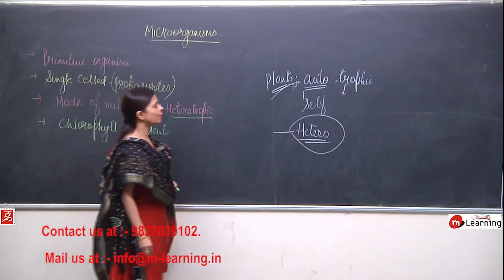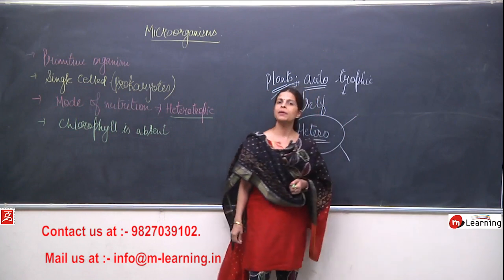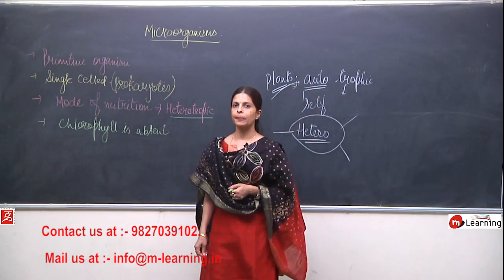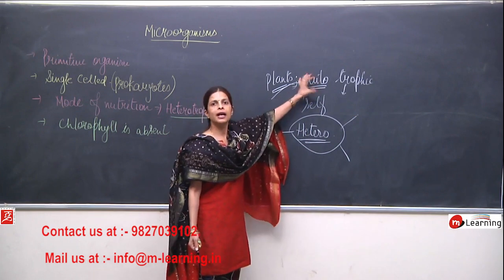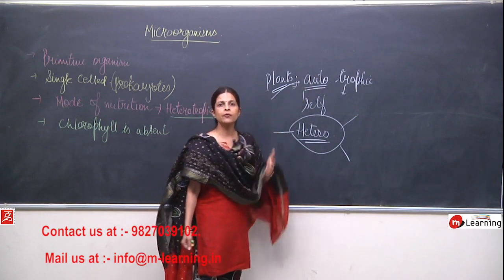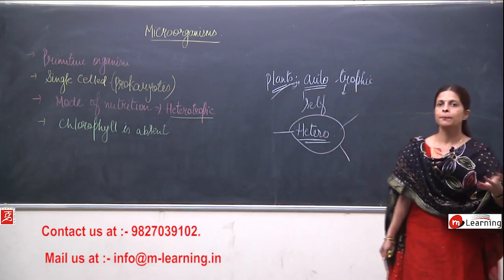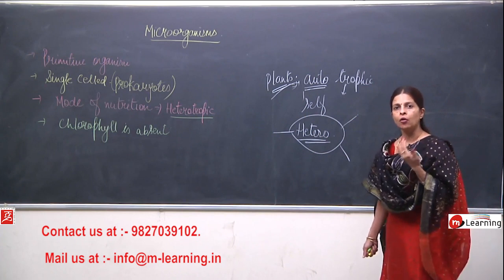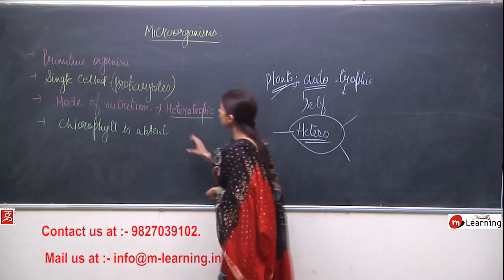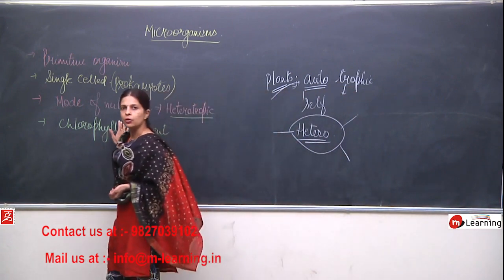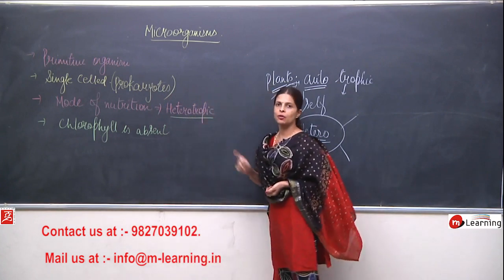Heterotrophic organisms have many different classes — they may be parasitic or saprophytic. Those who do not have chlorophyll cannot be autotrophic; they cannot make their own food. Bacteria do not have chlorophyll, and that is the reason their mode of nutrition is heterotrophic.